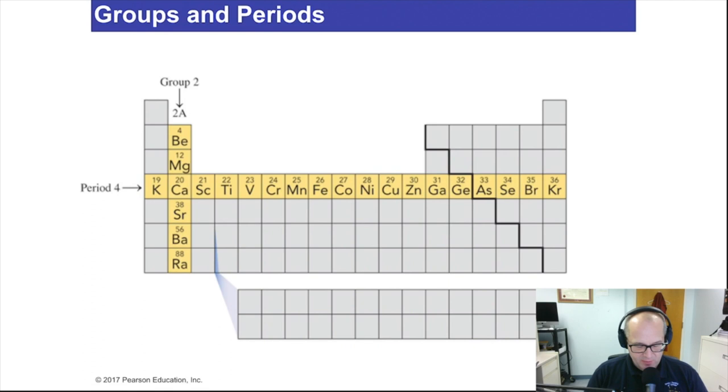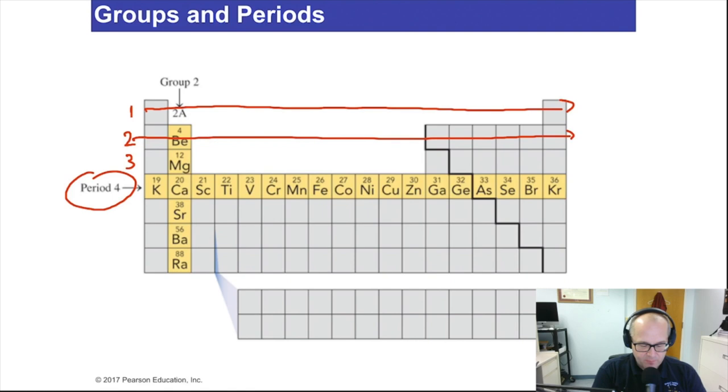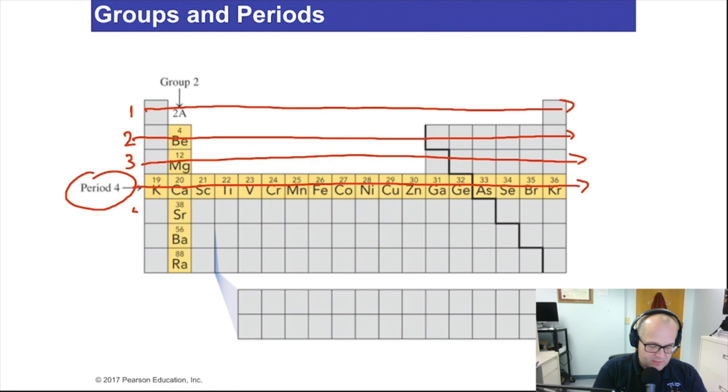So here we have a periodic table. Here we have period four. So this is period one here, period two, and period three. They run this way. Period two, period three, and then period four, and then obviously five, six, and seven. This is group two, so that's group one, group two, three, four, and so on. So the periods are numbered on the left, the groups are numbered at the top, and this is how it's broken down.